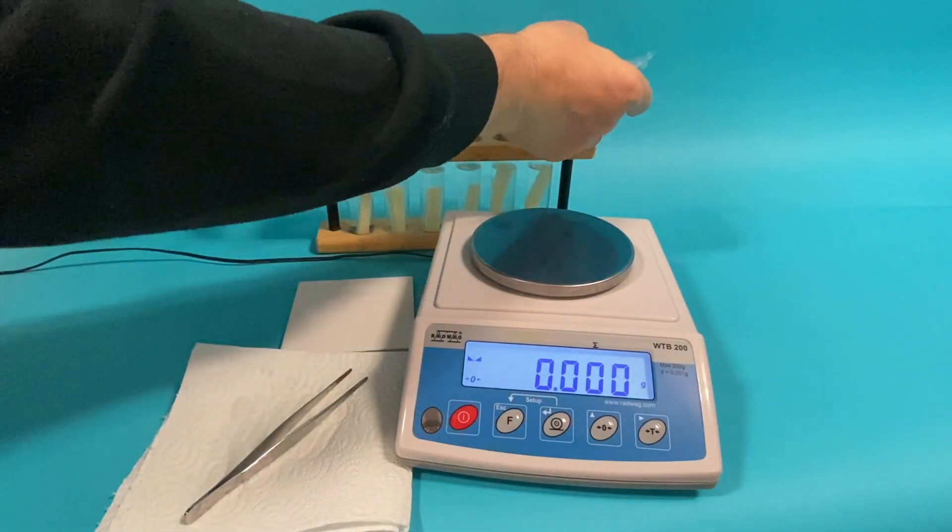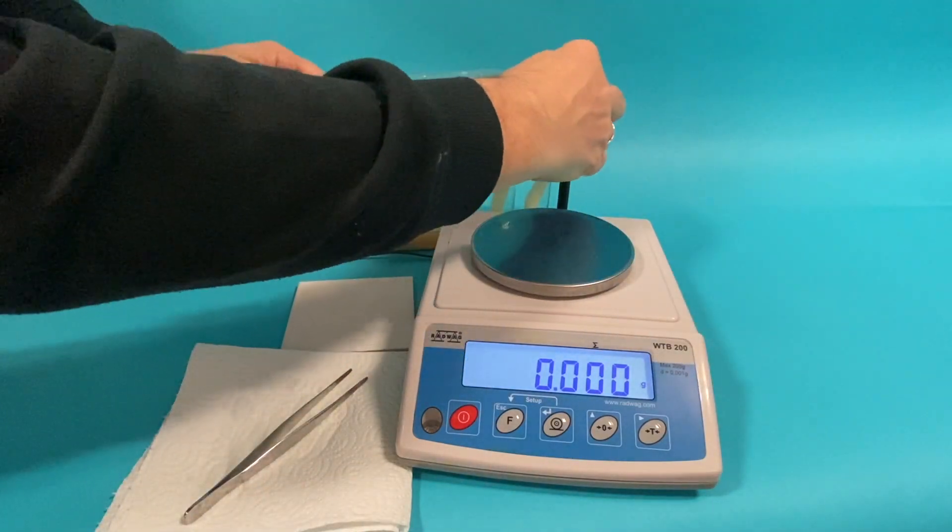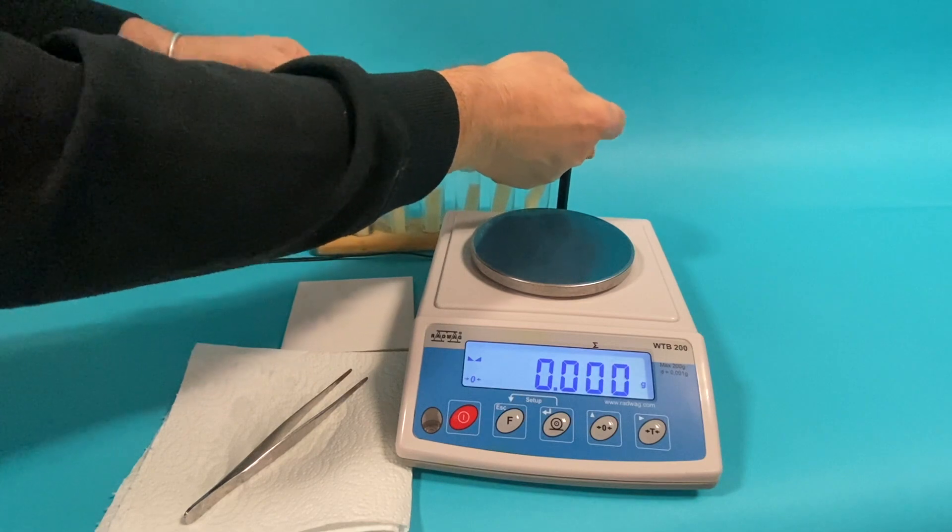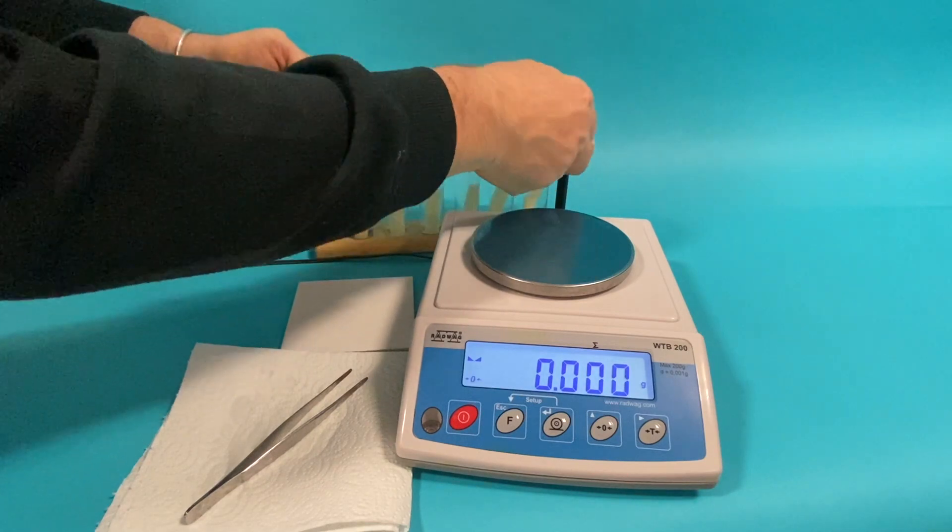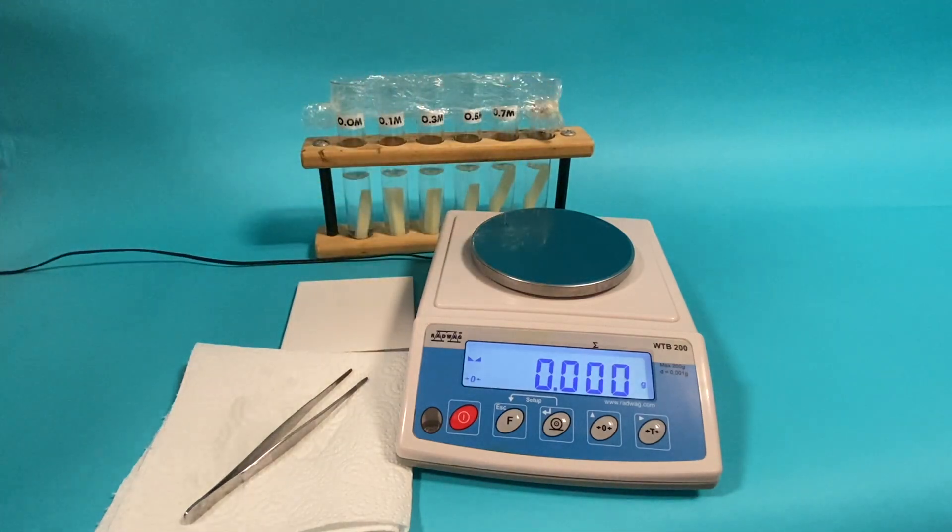Cover the boiling tubes containing the samples with the cling film provided. This will prevent any evaporation of the sucrose solutions and any contamination that may enter the tubes.